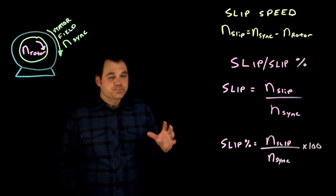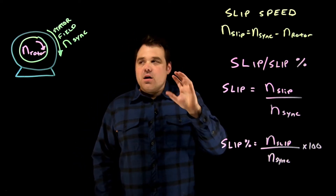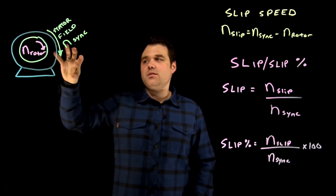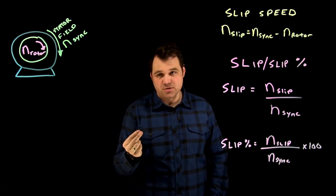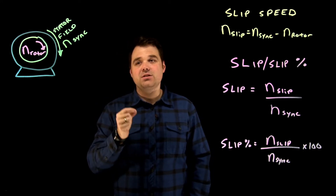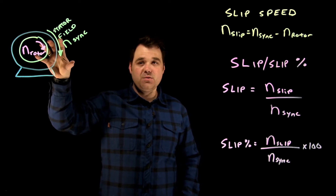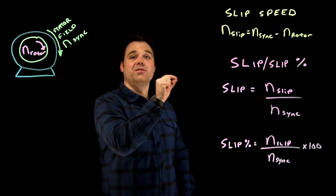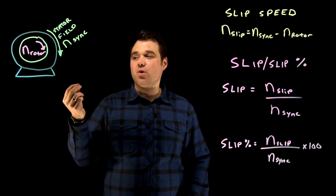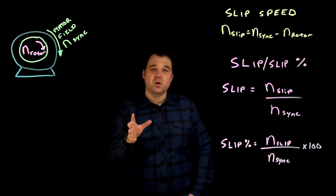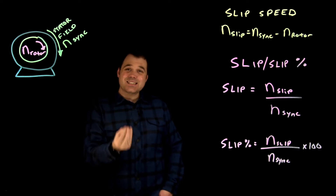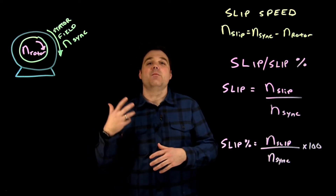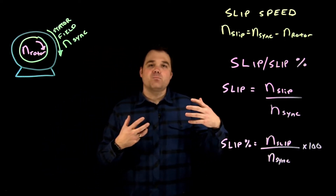Why is slip so important? If our stator is spinning around and around, our rotor is spinning a little bit slower behind it. The difference in speed between them is what creates the relative motion, and we know that relative motion between a conductor and a magnetic field induces a current and a voltage. So the difference between them determines how much gets induced into the rotor. The amount induced determines the strength of the rotor's magnetic field. If the difference is higher, we generate a stronger magnetic field in the rotor, which creates more torque. The slip is what determines the output torque.